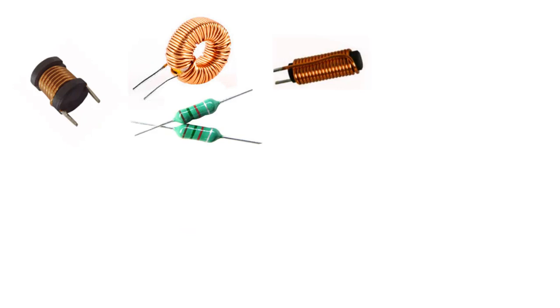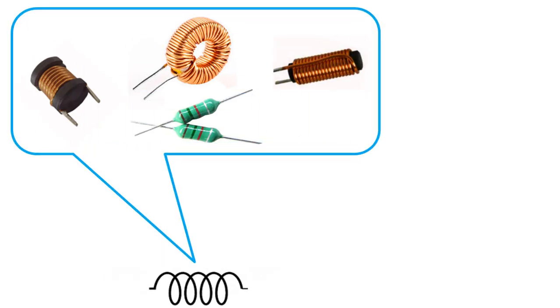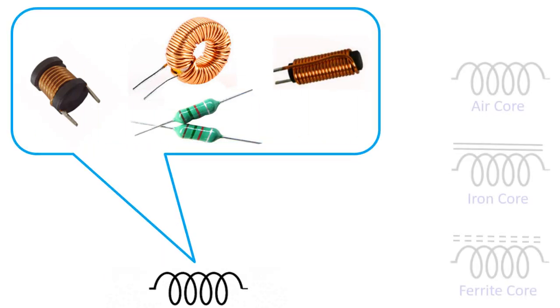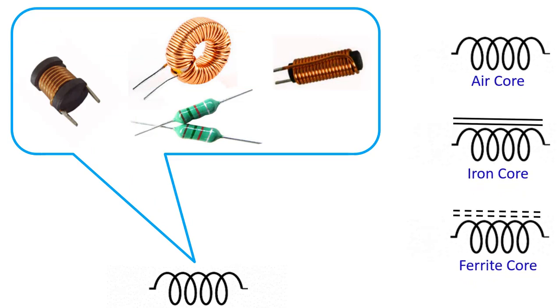In general, the symbol of the coils in circuits is shown as follows. But, according to the type of core used in the coils, their symbols differ slightly as seen on the right.